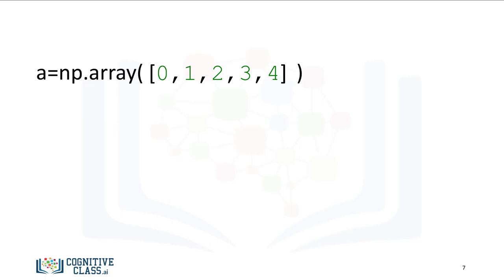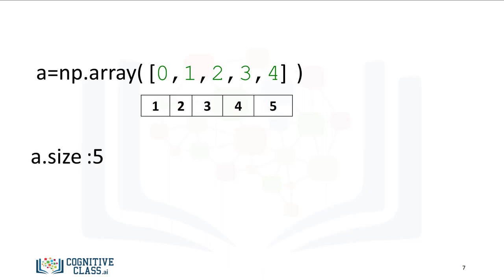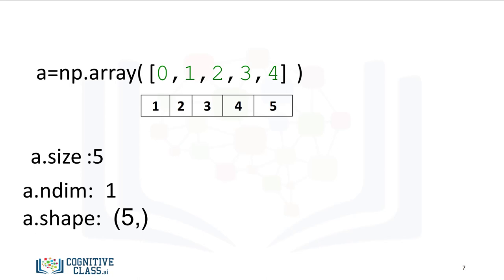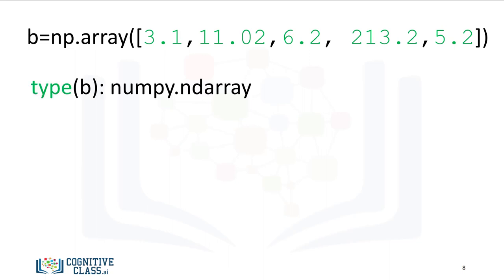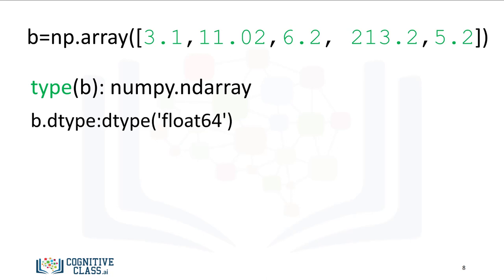Let's review some basic array attributes using the array A. The attribute size is the number of elements in the array. As there are five elements, the result is five. The attribute ndim represents the number of array dimensions, or the rank of the array, in this case one. The attribute shape is a tuple of integers indicating the size of the array in each dimension. We can also create a NumPy array with real numbers; if we examine the attribute dtype, we see float64 as the elements are not integers. There are many other attributes — check out numpy.org.